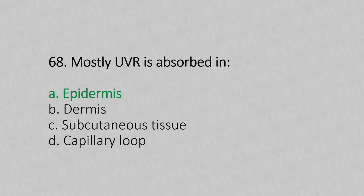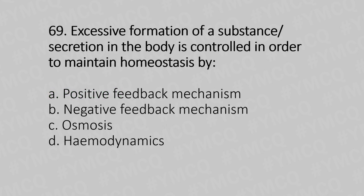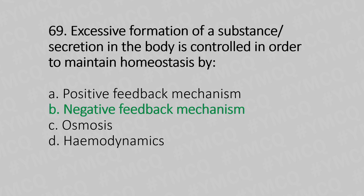Question 69: Excessive formation of a substance or secretion in the body is controlled in order to maintain homeostasis by — Option A: positive feedback mechanism, Option B: negative feedback mechanism, Option C: osmosis, Option D: hemodynamics. The answer is Option B, negative feedback mechanism.